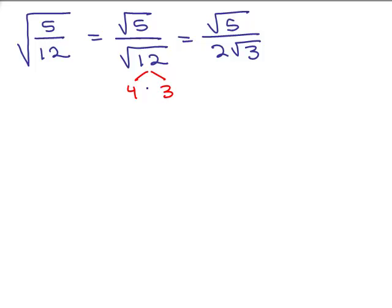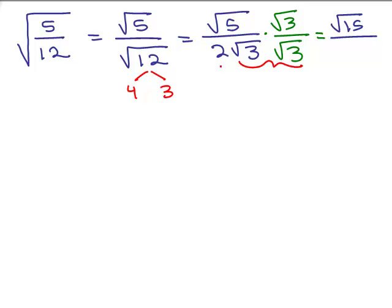You can work this out on scratch paper. Then you have a square root of 3 in the denominator. 2 is already rational, so you don't need to multiply by a 2, but you do need to multiply by the square root of 3. So in the numerator: square root of 5 times square root of 3 is square root of 15. And in the bottom you've got 2 times 3.